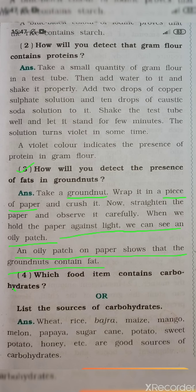Question number 4: Which food items consist of carbohydrates, or list the sources of carbohydrates? Wheat, rice, bajra, maize, mango, melon, papaya, sugarcane, potato, sweet potato, honey, etc. are good sources of carbohydrates.